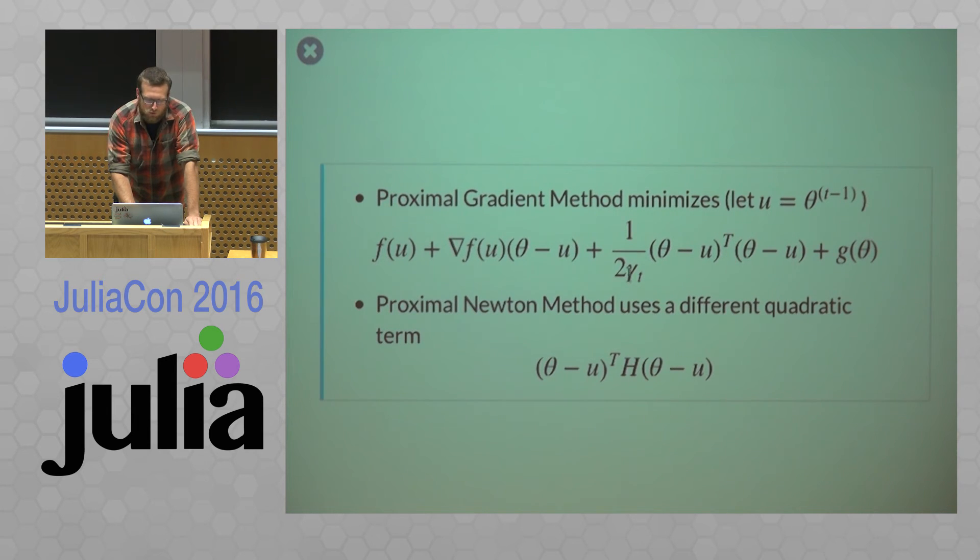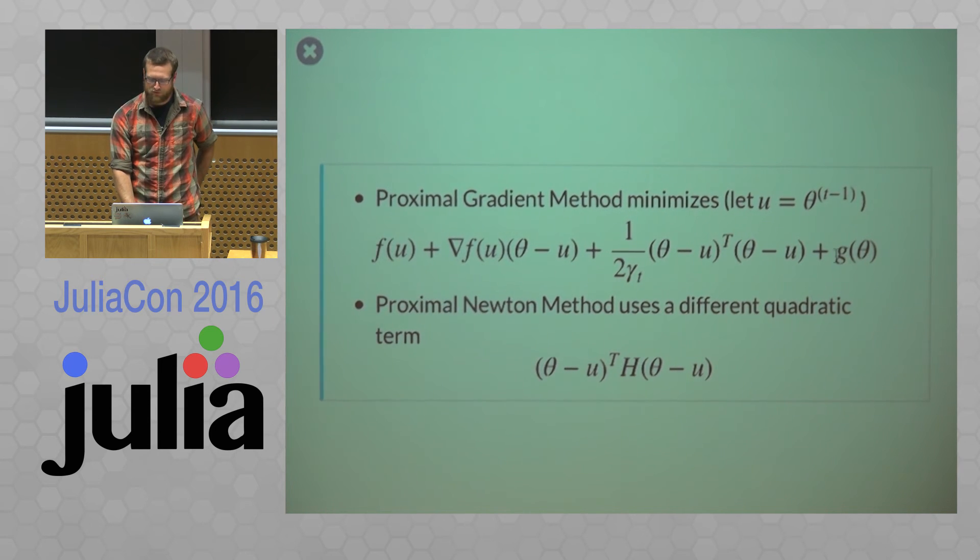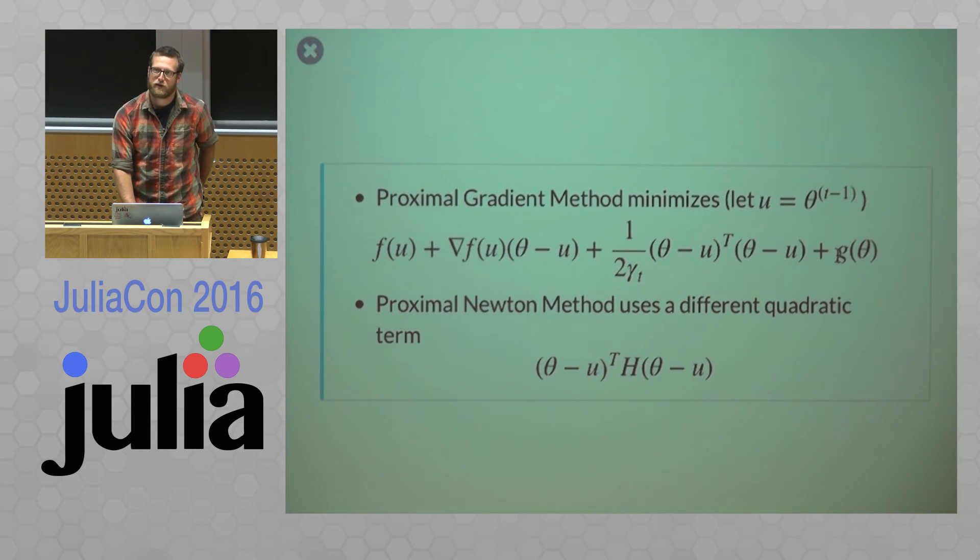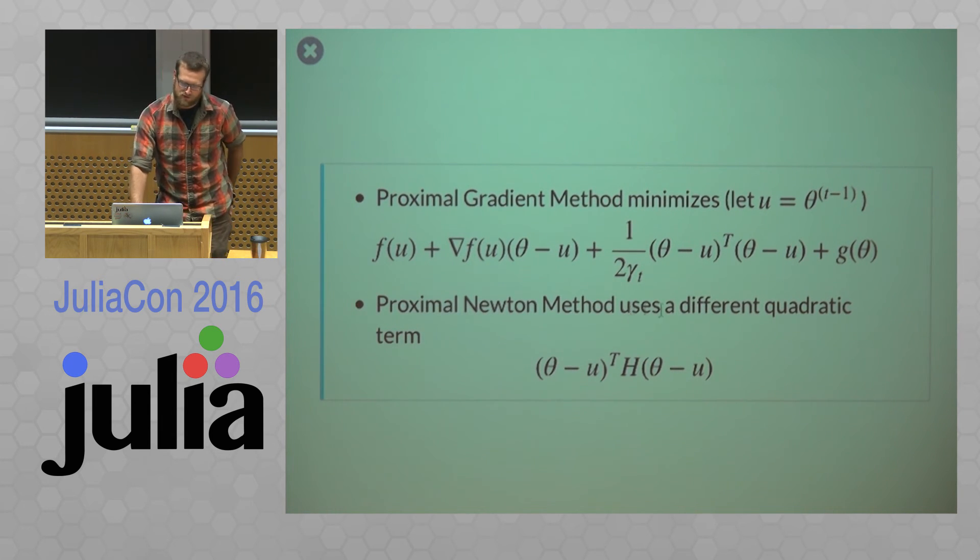So essentially, we're choosing, well, we can have a gamma. So for a gamma small enough, this is a MM algorithm. So you can see we're majorizing this f function and leaving g the same is essentially what we're doing. So we're iterating through this process of minimizing this. And proximal Newton method is just a slight change to this. So we're approximating the second derivative with some matrix H.